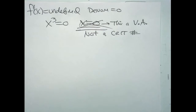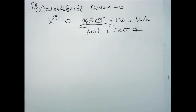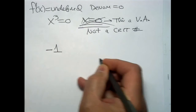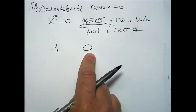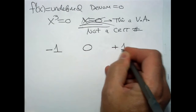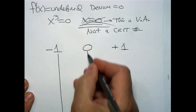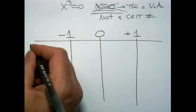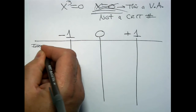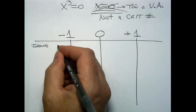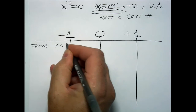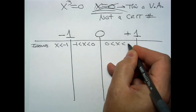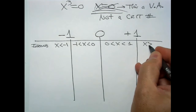When you create your increasing/decreasing list, use all slicers: x = −1 as a critical number, x = 0 as a vertical asymptote (not a critical number), and x = 1 as a critical number. Slice up the domain into intervals: all x less than −1; x between −1 and 0; x between 0 and 1; and x greater than 1.